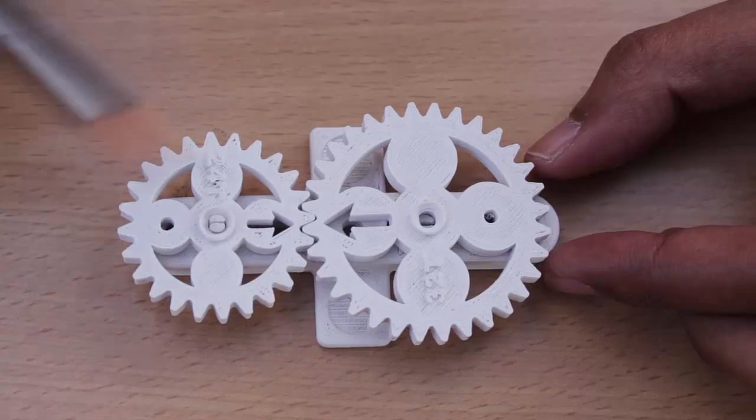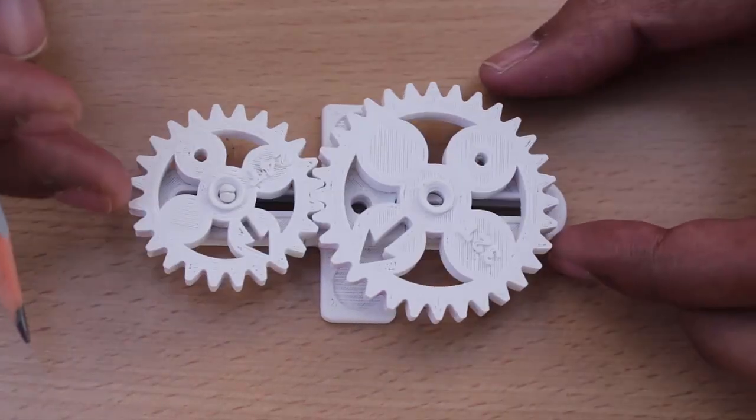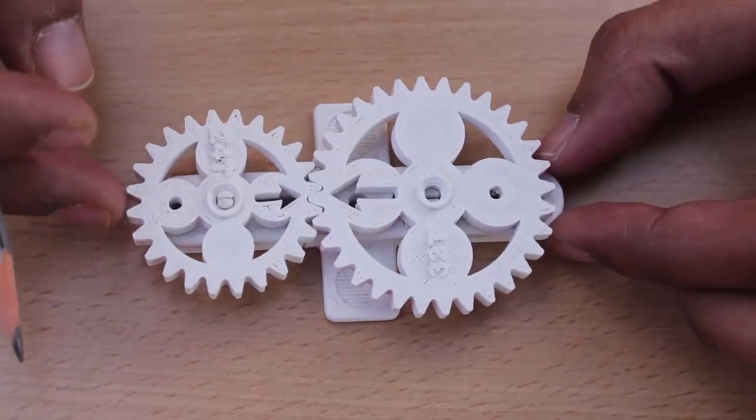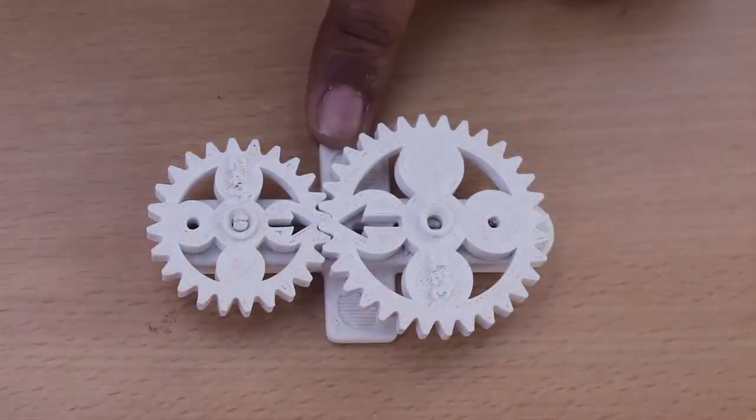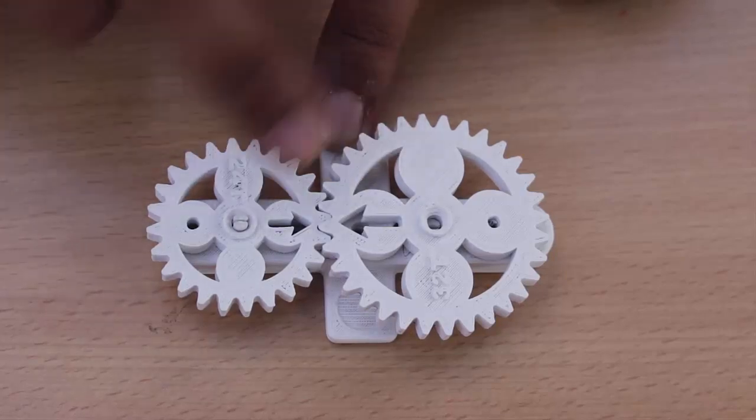Now I repeat the same question: after how many rotations of the 24-tooth gear will both arrows meet again? Let's see after how many rotations of the smaller gear both arrows will meet again.